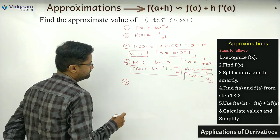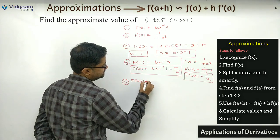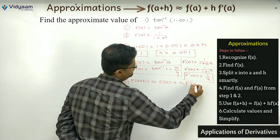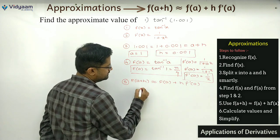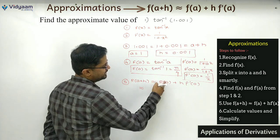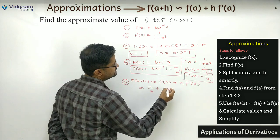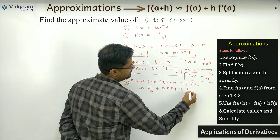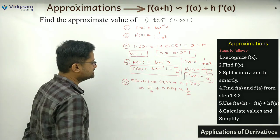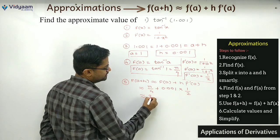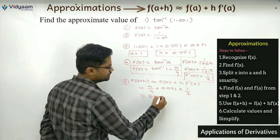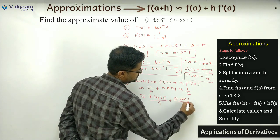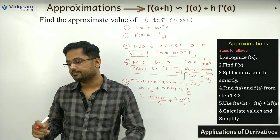Now I'll apply the master formula: f(a + h) ≈ f(a) + h·f'(a). Substituting: f(a) = π/4, h = 0.001, f'(a) = 1/2. We can take π = 3.1416, divided by 4, plus 0.001 divided by 2.